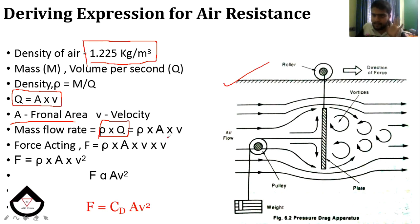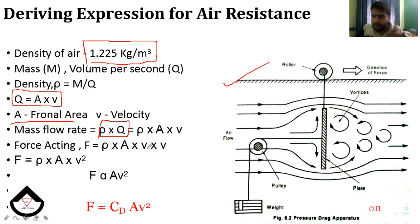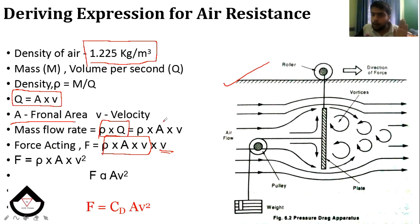The mass flow rate will be equal to the rate of change of momentum. That means force equals mass flow rate into velocity. So, force equals rho A V into V — that is the air resistance force.